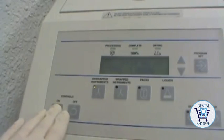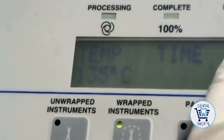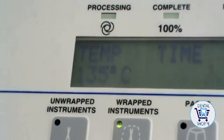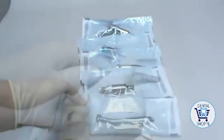When autoclaving or chemiclaving hand pieces, do not exceed temperatures of 275 degrees Fahrenheit or 135 degrees Celsius. Use autoclave bags with at least one paper side as they'll allow moisture to escape. Never use all plastic bags.